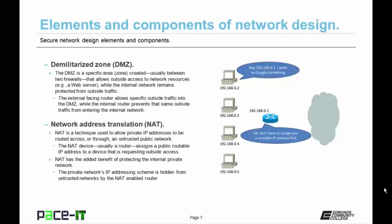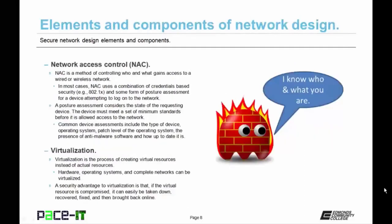NAT is a technique used to allow private IP addresses to be routed across or through an untrusted public network. The NAT device, which is usually a router, assigns a public routable IP address to a device that is requesting outside access. NAT has the added benefit of protecting the internal private network — the private network's IP addressing scheme is hidden from untrusted networks by the NAT-enabled router, making it harder for a hacker to gain access to internal network resources. Now let's talk about NAC, Network Access Control.